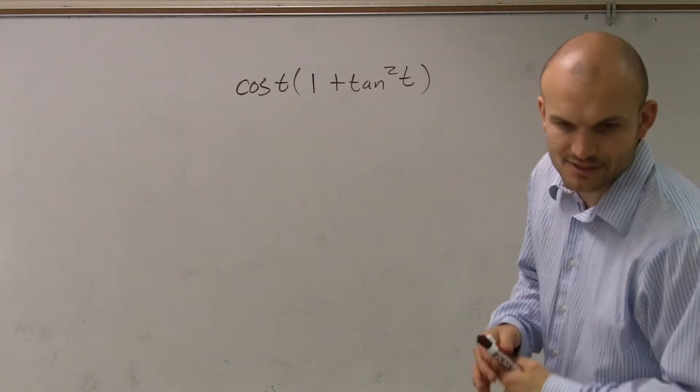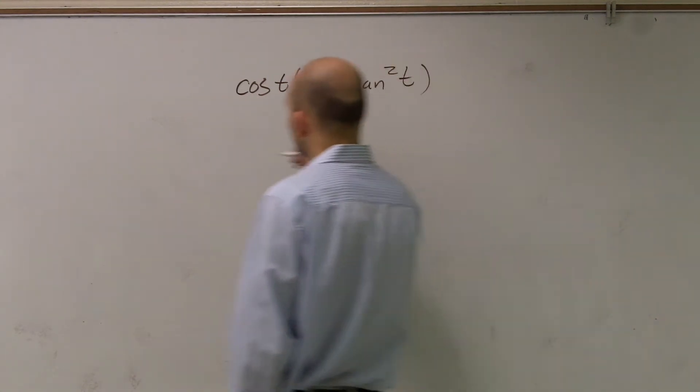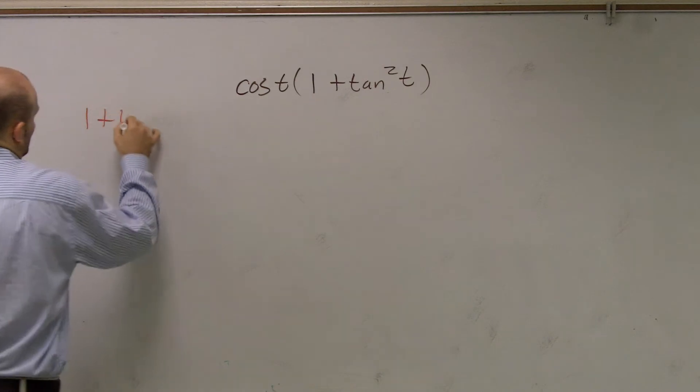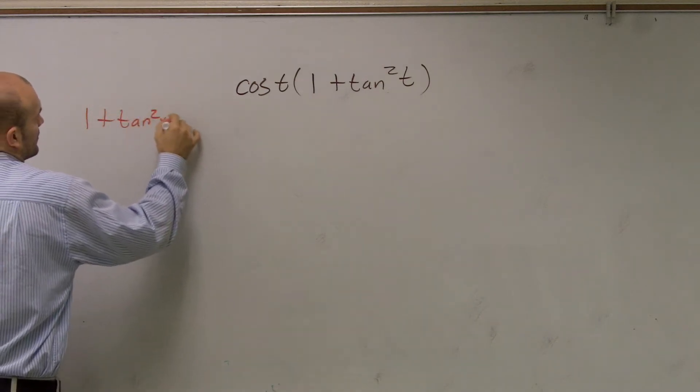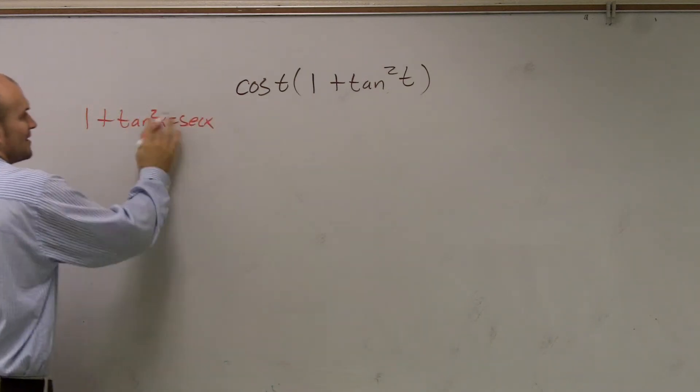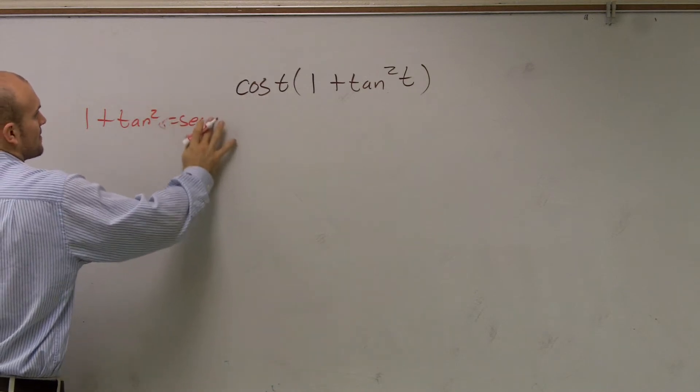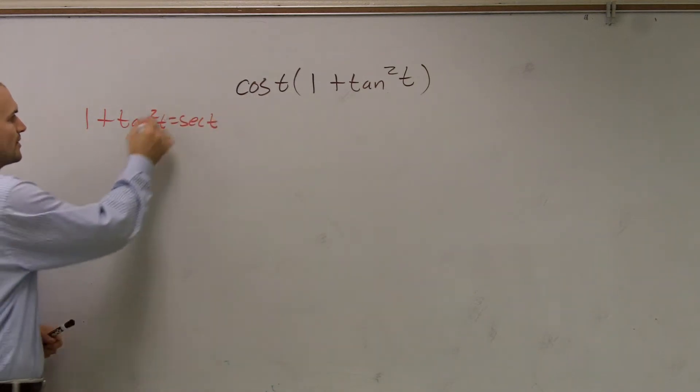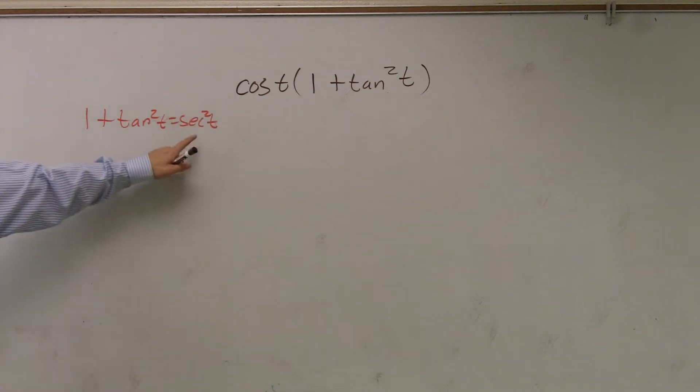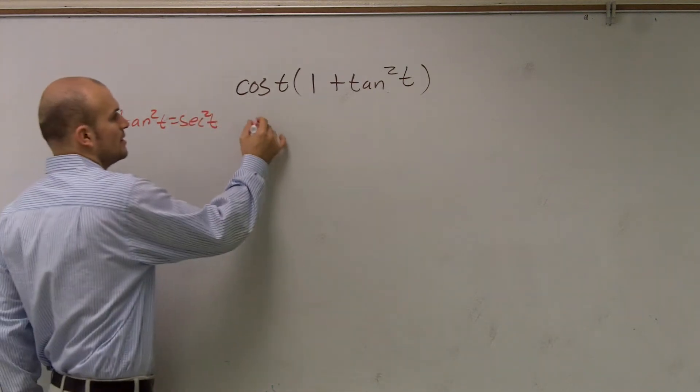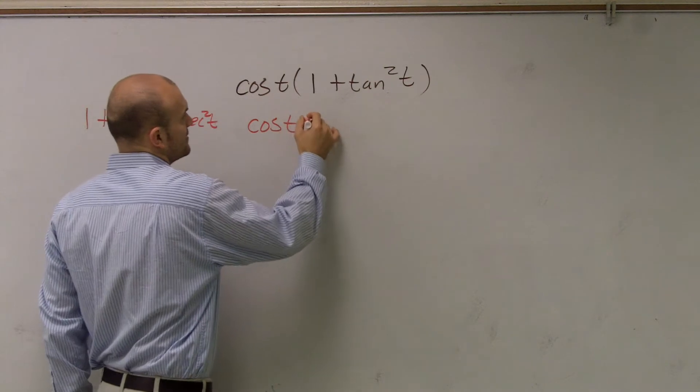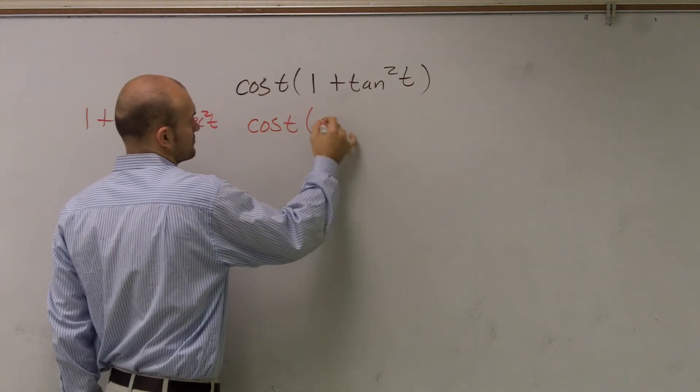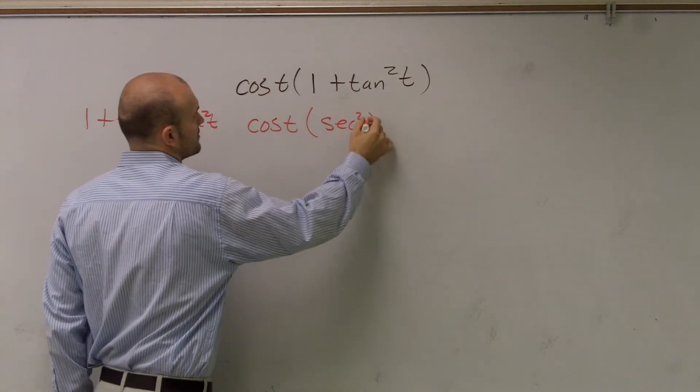And my trig identity is going to tell me that 1 plus tangent squared equals secant squared. And obviously, we're using t, not x. So these are squares. So therefore, why not just rewrite that as secant squared? So I'll be left with cosine of t times secant squared of t.